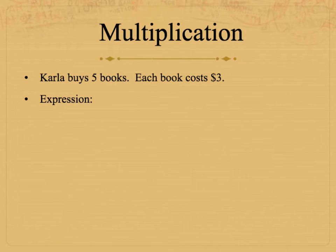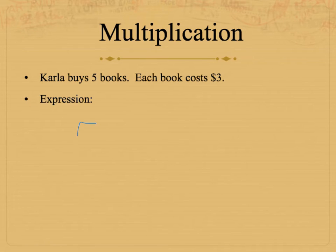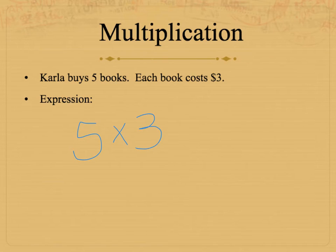This is a multiplication expression. Carla buys 5 books. Each book costs $3. So we know that if she buys 5 books and each of them are $3, we would have to multiply — 5 times 3.